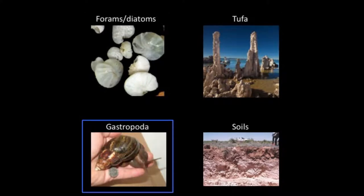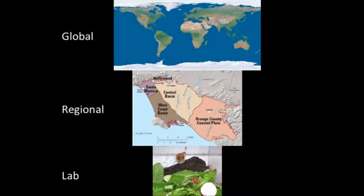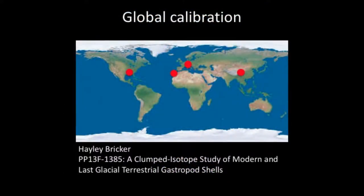I'm going to focus on gastropoda, specifically snails, attacking this from three levels: the global — which I won't talk about today since it's being led by a postdoc — the regional, and the lab level. A quick plug for the postdoc working with me: if you're going to AGU, Haley Bricker, poster 13F-1385, will be talking about a modern calibration across the globe using different snail samples and trying to do LGM measurements to tease that apart. You should check it out — and if you're looking for a grad student in coming years, maybe talk to her.